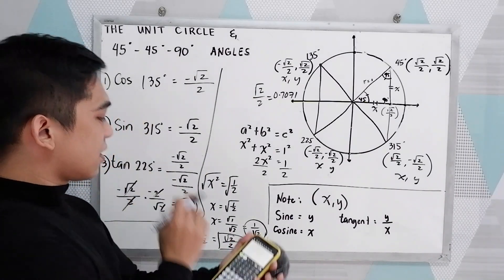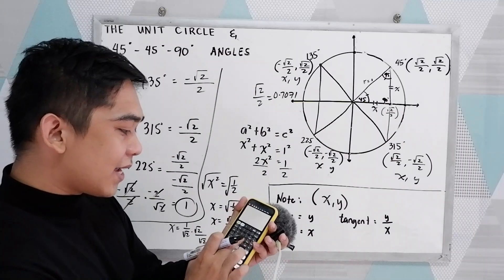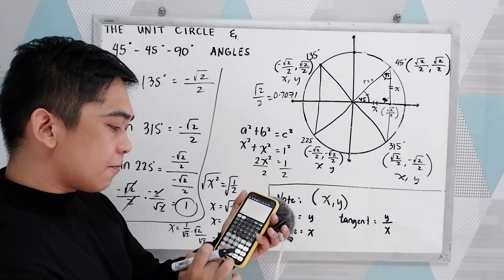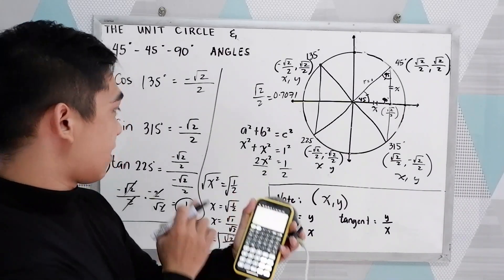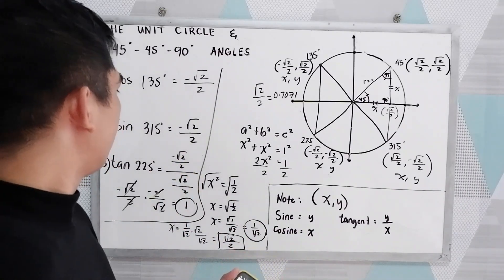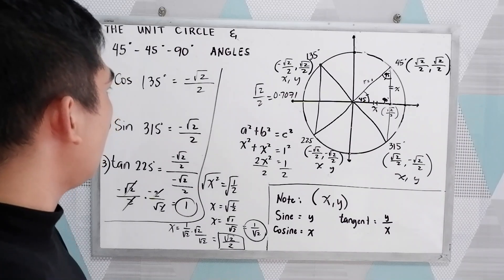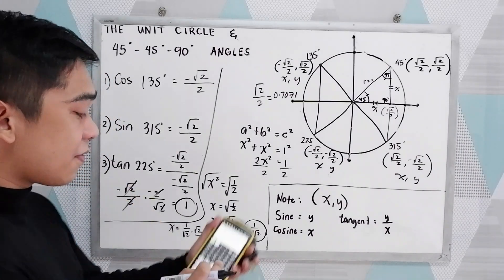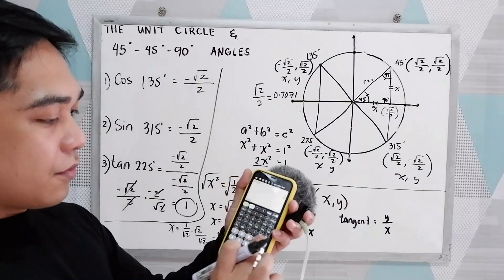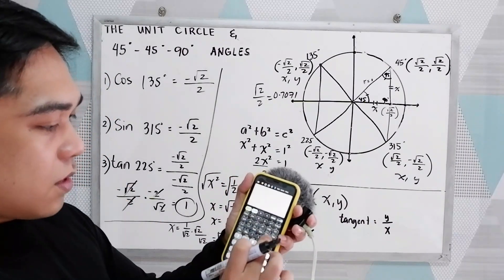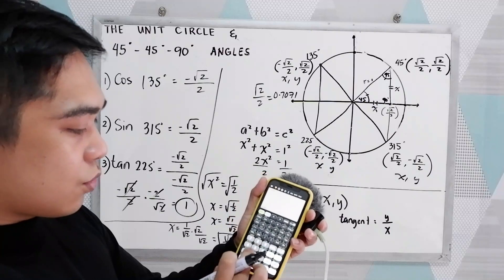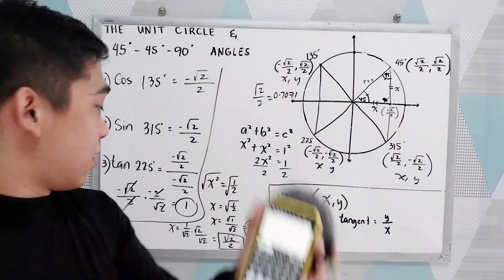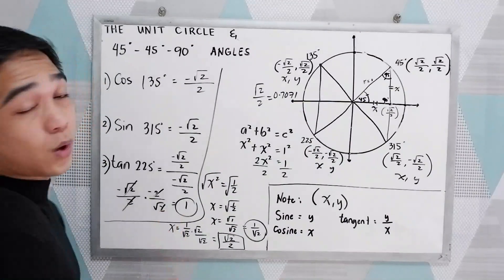For sine 315, the calculator confirms the same result. For tangent 225, the calculator gives 1, which matches our answer.